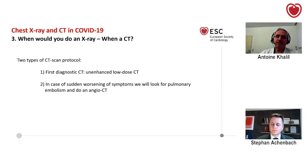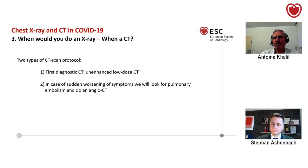Concerning the type of CT protocol: for the first visit when patients go to the emergency department, we perform an enhanced low-dose CT — this is sufficient to diagnose the disease and assess its extension. For follow-up, we can use non-enhanced CT. However, if there is a sudden worsening of symptoms, we must look for pulmonary embolism, as D-dimer levels are very high in these patients and pulmonary embolism is more frequent than in the normal population. In that case, we perform enhanced CT.